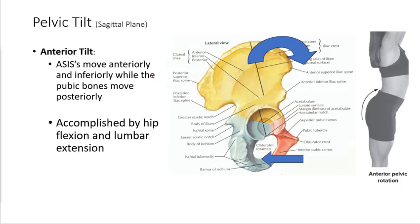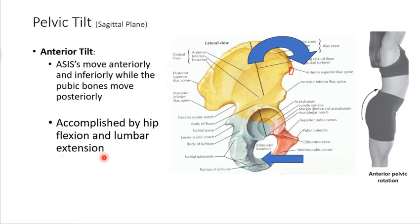You can see it here: here's anterior, here's posterior, and you have your ASIS. If the ASIS drops down, that's an anterior pelvic tilt. You'll notice that when you're doing this pelvic tilt, you're actually getting some lumbar spine movement and hip movement to move the pelvis. Because in order for the femur to stay stable, the movement has to come from somewhere. When you're doing an anterior pelvic tilt, this is accomplished by the same muscles that do lumbar extension — your erector spinae and multifidus — and also the muscles that do hip flexion, so psoas major and iliacus.